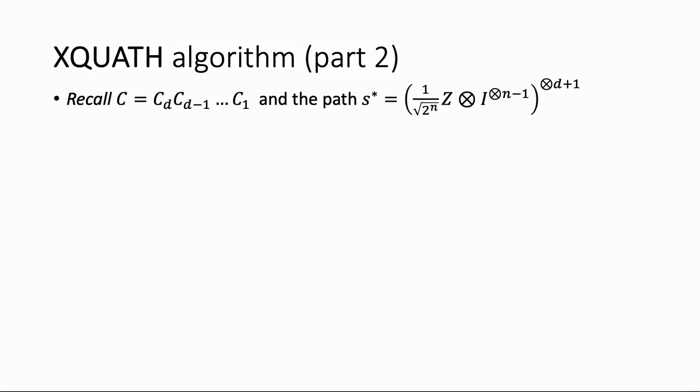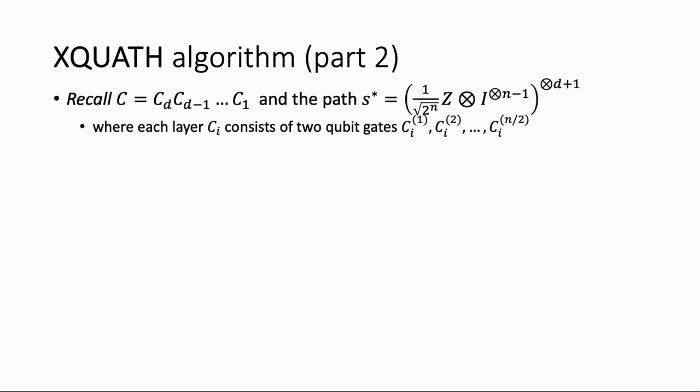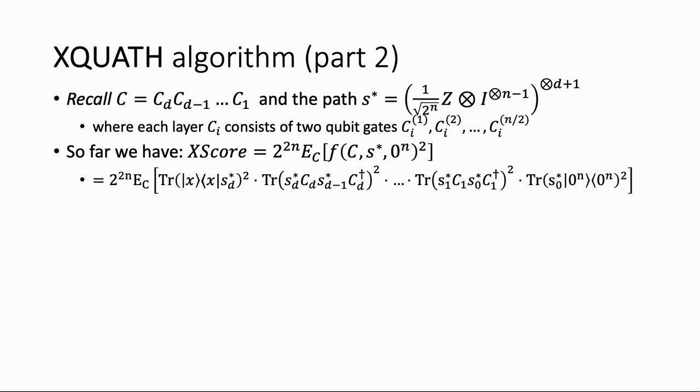Now let's write what this square is. Plugging in the definition of the path, it's the square of a whole product of traces, each involving S-star. The bookend terms — the first and last — are easy to calculate; each is one over square root of two to the N, so squared gives one over two to the 2N, and the two of them cancel the normalization. For the transition amplitude terms in the middle, we can break apart the expectation over an N-qubit layer into a product of expectations over two-qubit gates — they're all independent, so we can group by which pairs of qubits each gate acts on.